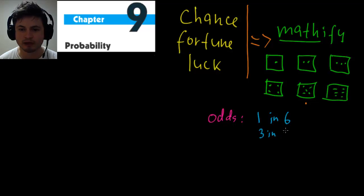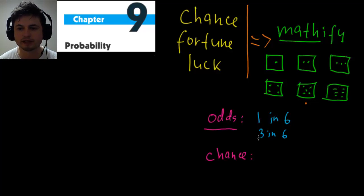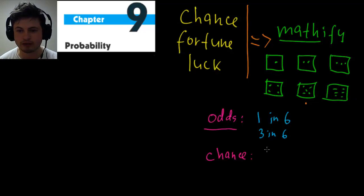This is one of the ways you'll hear probability expressed — using the word 'odds.' We can also express it as percentages, referred to as 'chance.' What is the chance of getting four, five, or six? The chance is three divided by six, which is one divided by two — 50%. Calculating the fraction gives you the percentage.